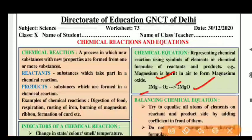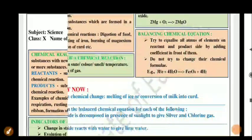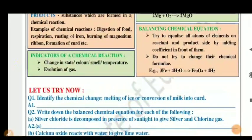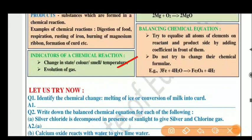That is a balanced chemical equation, where the number of atoms of reactants equals the number of atoms of products. We call it a balanced chemical reaction. The indications of a chemical reaction include: change in state, change in color, change in temperature, and evolution of gas — where gas can be released.